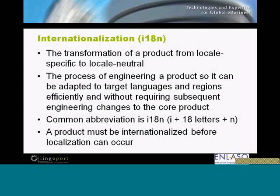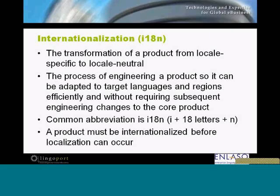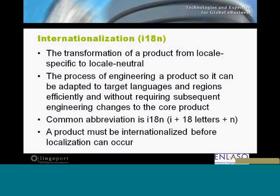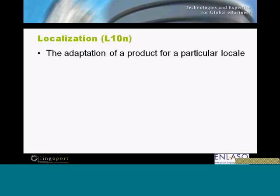Sometimes we see companies that break that rule and they localize before they really should have. The problem is they fork their code. They end up with two products to support, or N products to support, depending upon how many languages — often when a distributor takes over, for example, Japaneseizing a product.